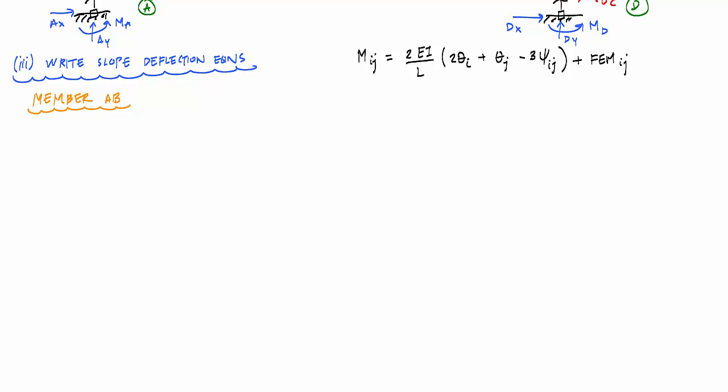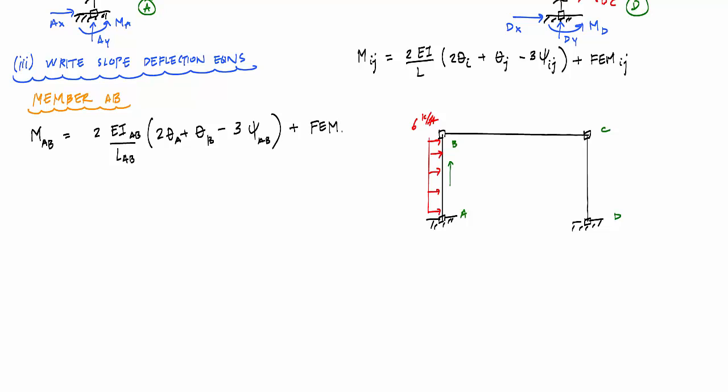And if you recall the frame from before, just to give you a quick reminder, it looked like this. And so for this equation here, that first slope deflection equation, M_AB would be 2EI_AB over the length of AB, 2θ_A plus θ_B minus 3ψ_AB, which is the chord rotation, plus FEM, the fixed end moment at A.